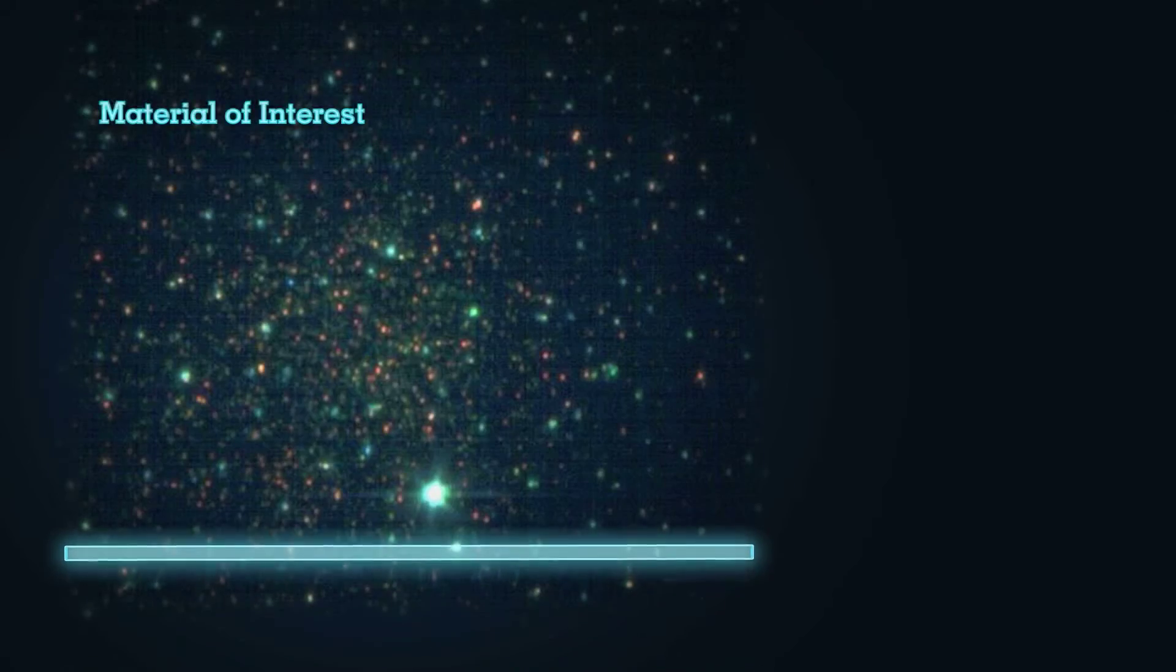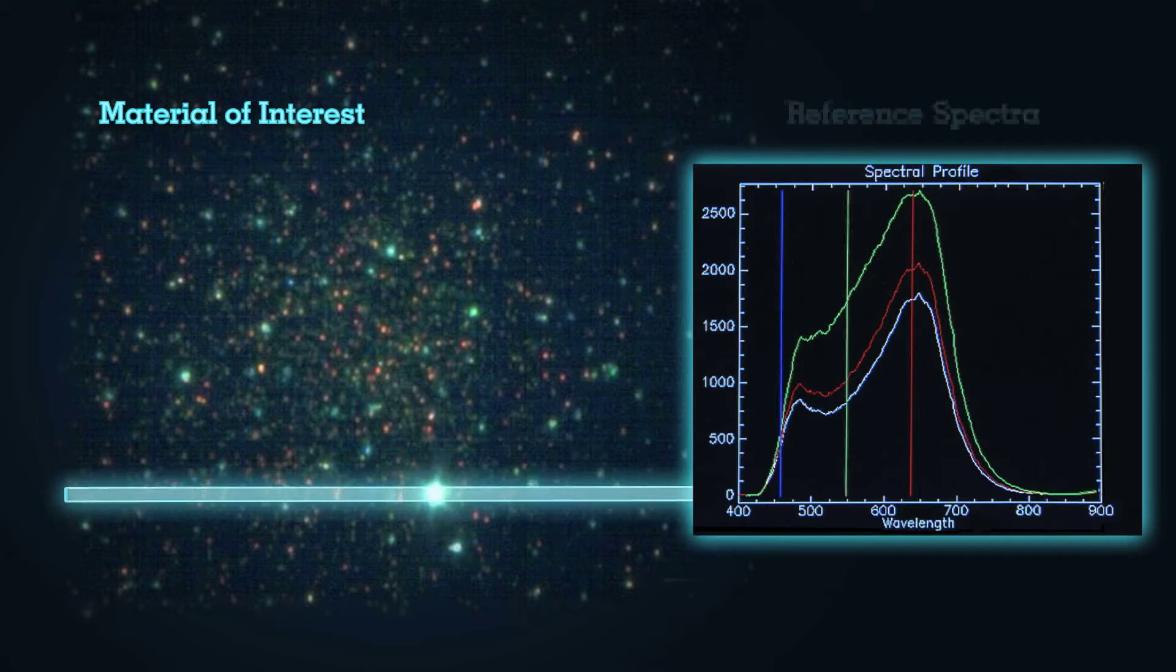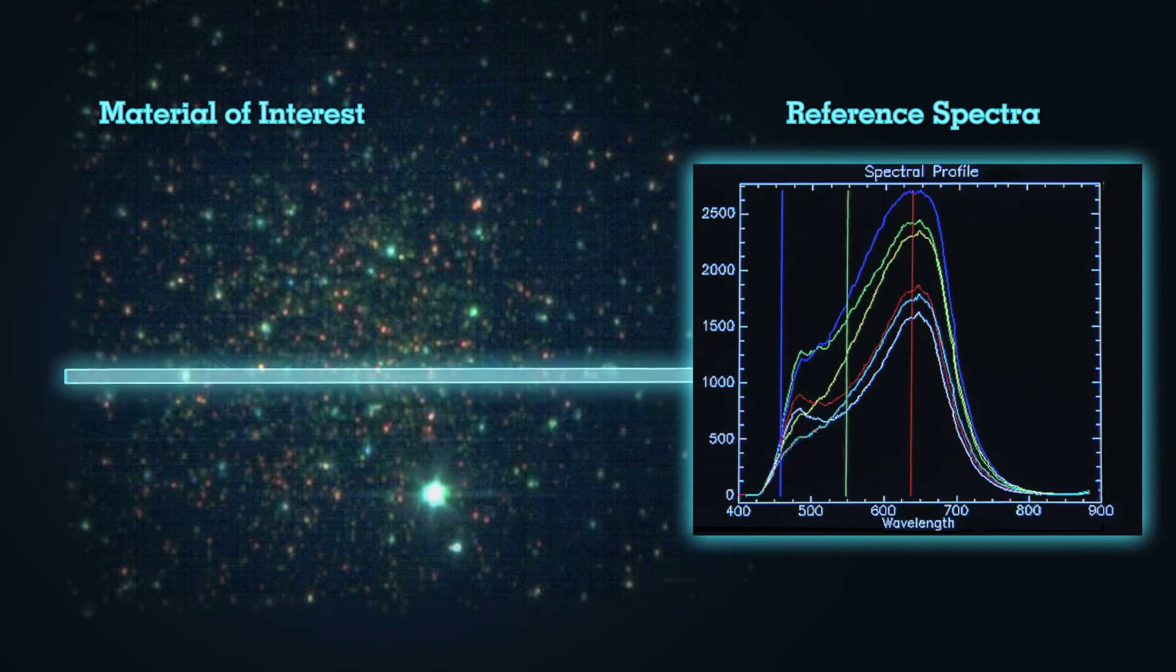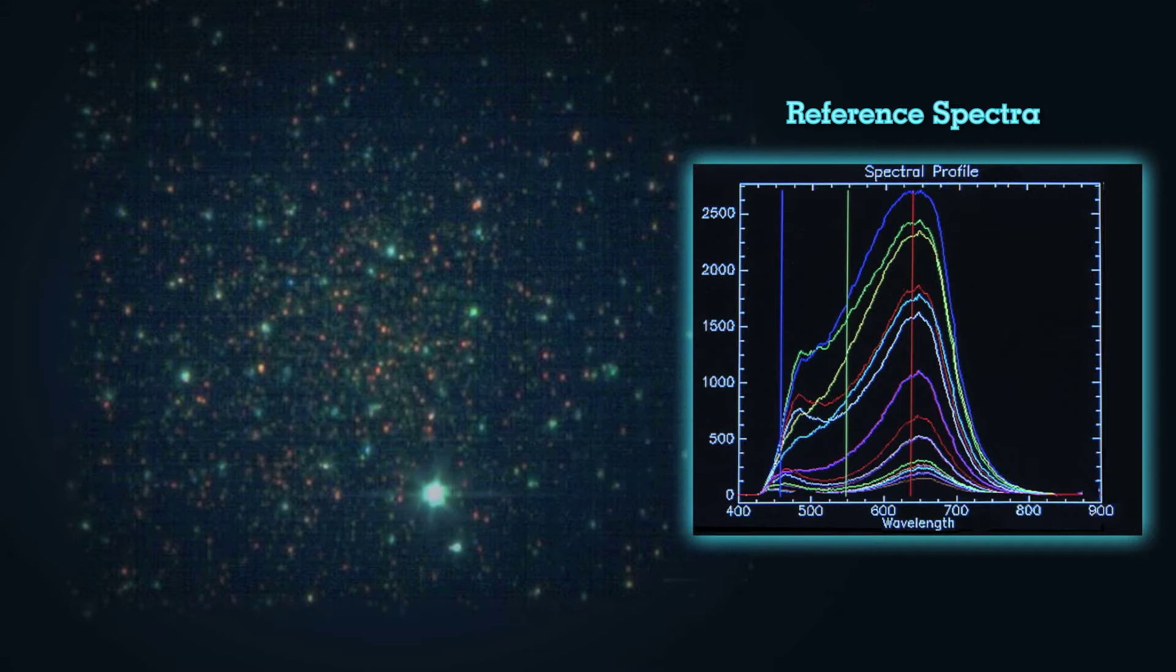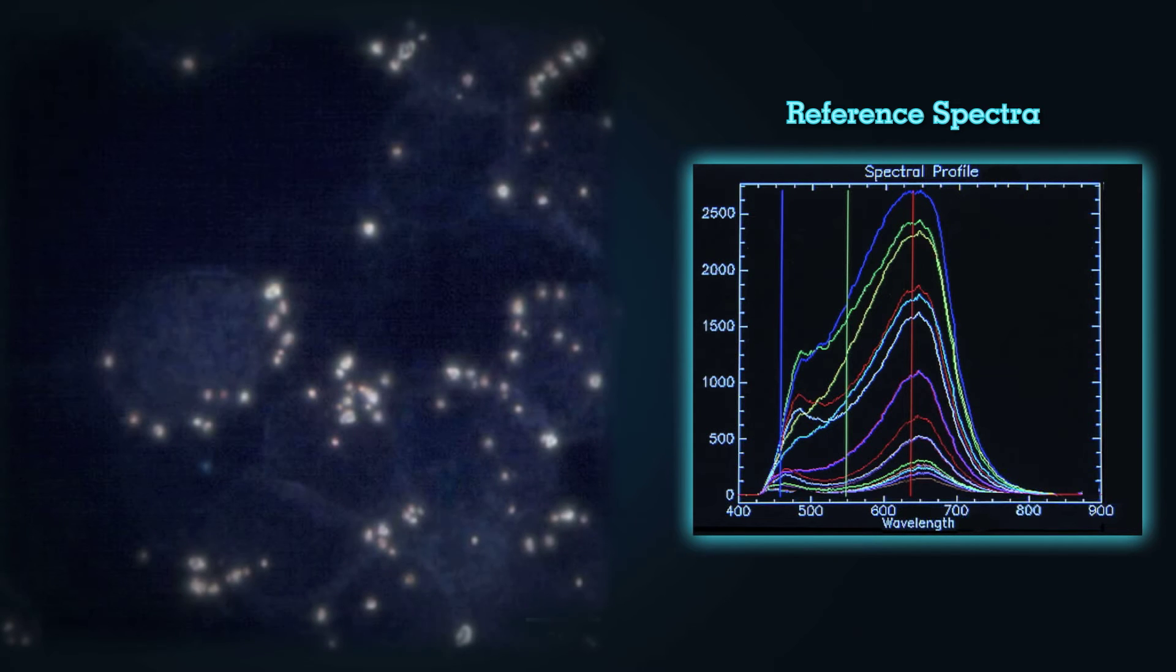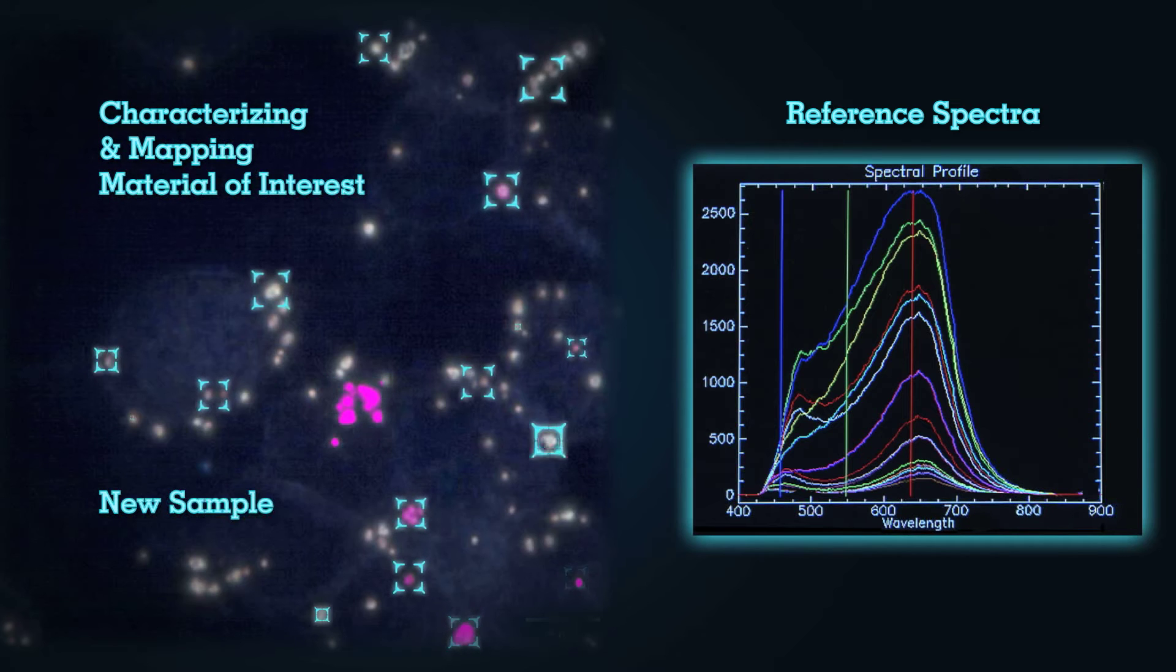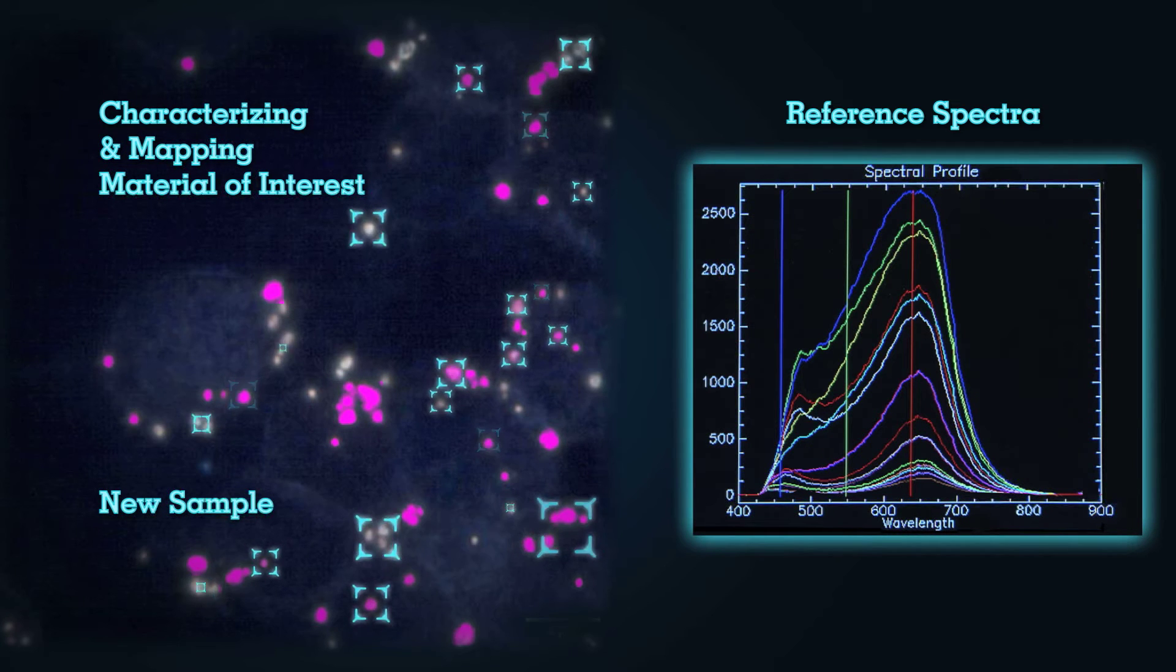This confirmation requires that the nanomaterial of interest is first scanned. The reference spectra of the material is then collected and stored in the spectral library of the image analysis software. Now the nanomaterial can be spectrally characterized and mapped in newly scanned samples.